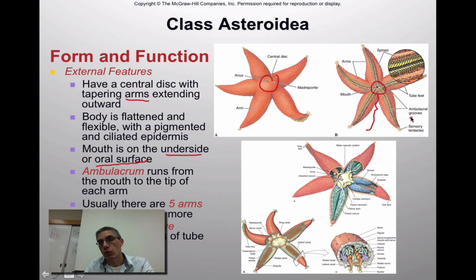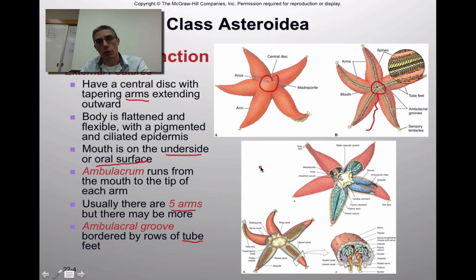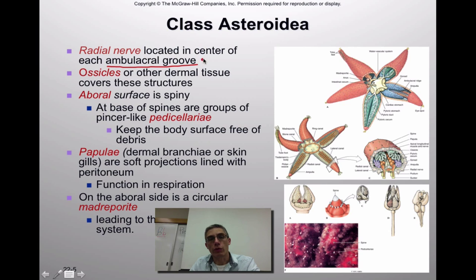There's an ambulacral groove where you'll find the majority of tube feet that allow the animal to move from place to place. There are typically five arms, though some species can have 15 or even 20. The ambulacral groove runs from the mouth to the tip and contains those tube feet used in locomotion. Deeper inside, there's a radial nerve located in the center of that groove, used to regulate the animal's movement and response to environmental stimuli.